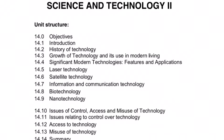GPS – Global Positioning System. The Global Positioning System (GPS) is the only operational global navigation satellite system. It is a set of satellites and control systems that allow a specially designed GPS receiver to determine its location anywhere on Earth. The receiver connects to more than 20 satellites at a time to determine its exact location. It has a wide range of applications today. It was developed by the Department of Defense of the U.S.